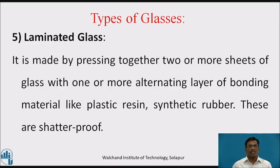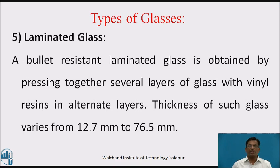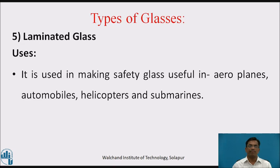Fifth type of glass is laminated glass. It is made by pressing together two or more sheets of glass with one or more alternating layers of bonding material like plastic resin, synthetic rubber, etc. These are shatter-proof. A bullet-resistant laminated glass is obtained by pressing together several layers of glass with vinyl resin in alternate layers. Thickness of such glass varies from 12.7 mm to 76.5 mm. Uses: it is used in making safety glasses useful in aeroplanes, automobile industry, helicopters and submarines, etc.